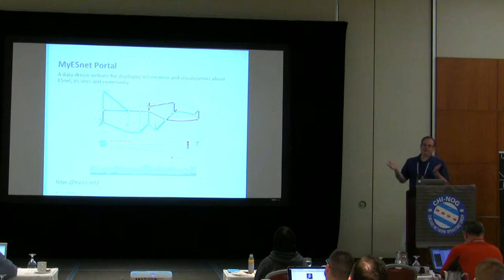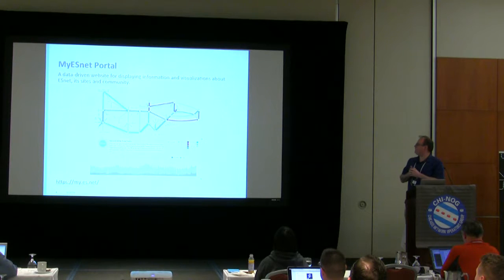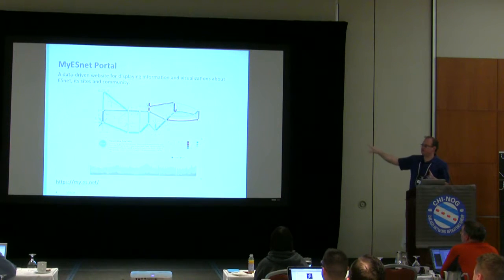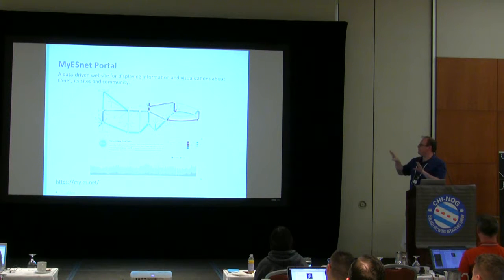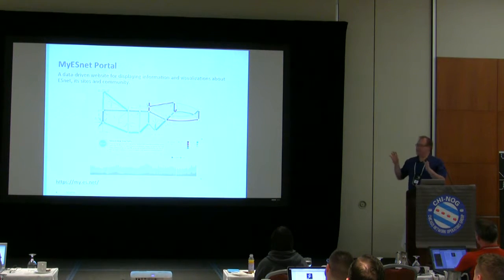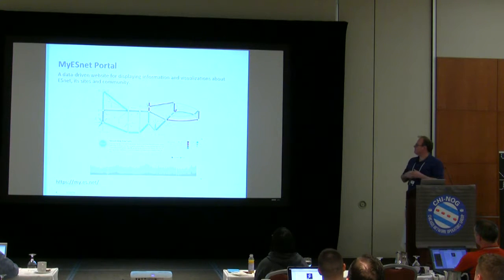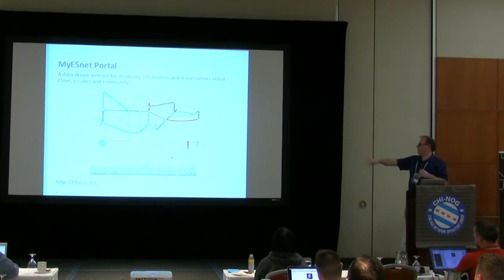Here's the motivating example — something I built about five years ago. This is the front page of the MyESNet portal, which lets you see what's going on in the ESNet network. At the top there's a traffic map showing what's going on in near real time — about three to five minutes delayed due to processing. That changes over time, and underneath you see the total traffic in and out of the network.